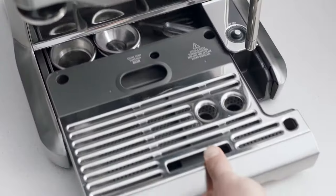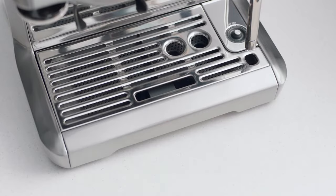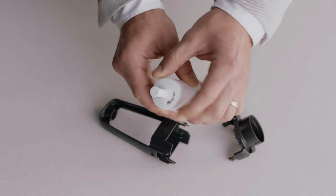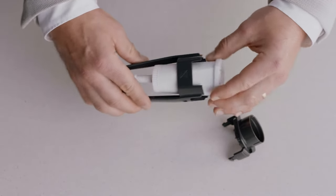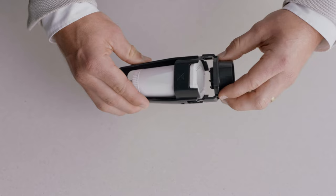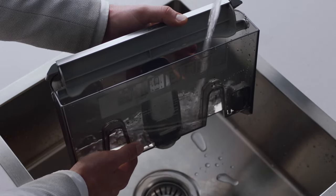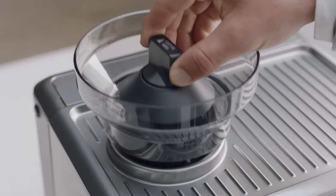Soak the filter in water for five minutes. Set the new filter to the current month, pop it into the filter holder, fit the holder snugly into the bottom of the tank, and fill with cold water. Check your water hardness by dipping this test strip into the water tank. You'll use this info shortly.